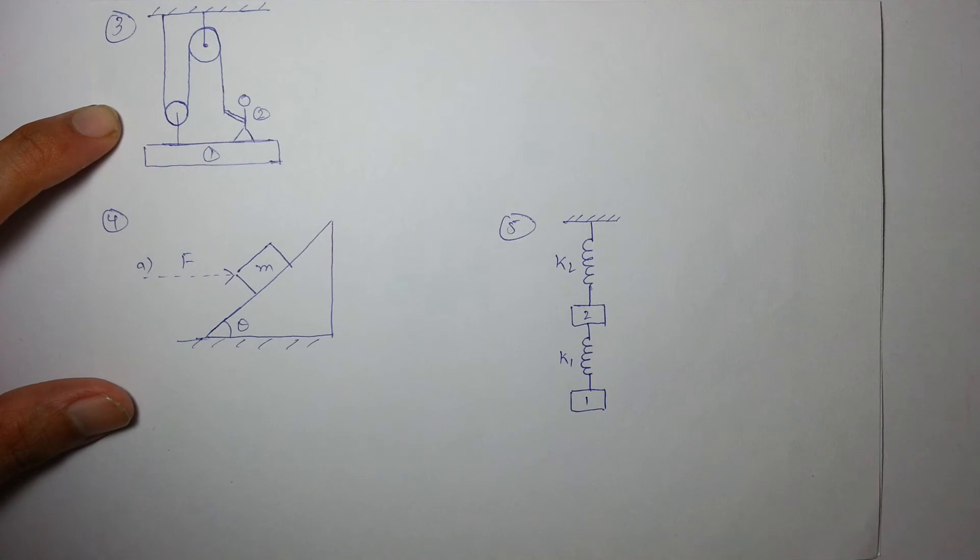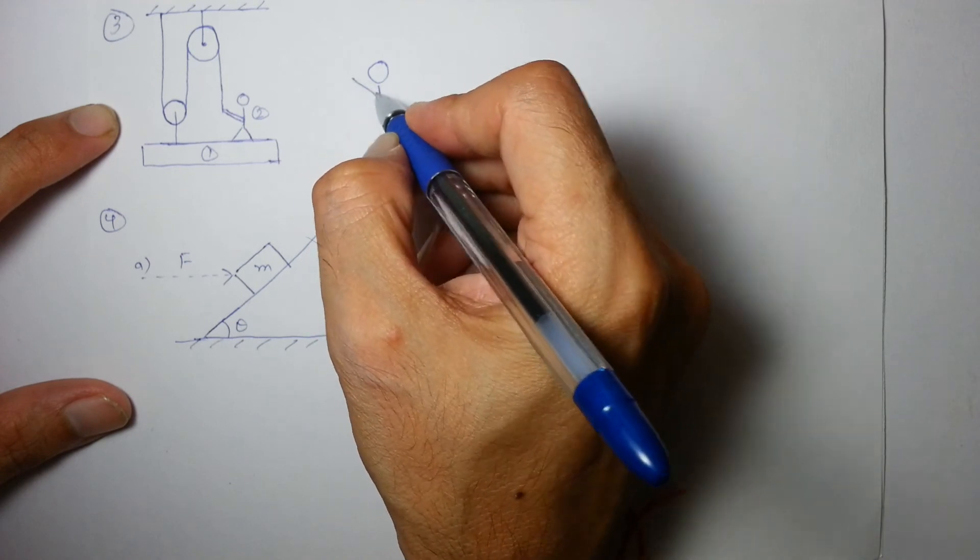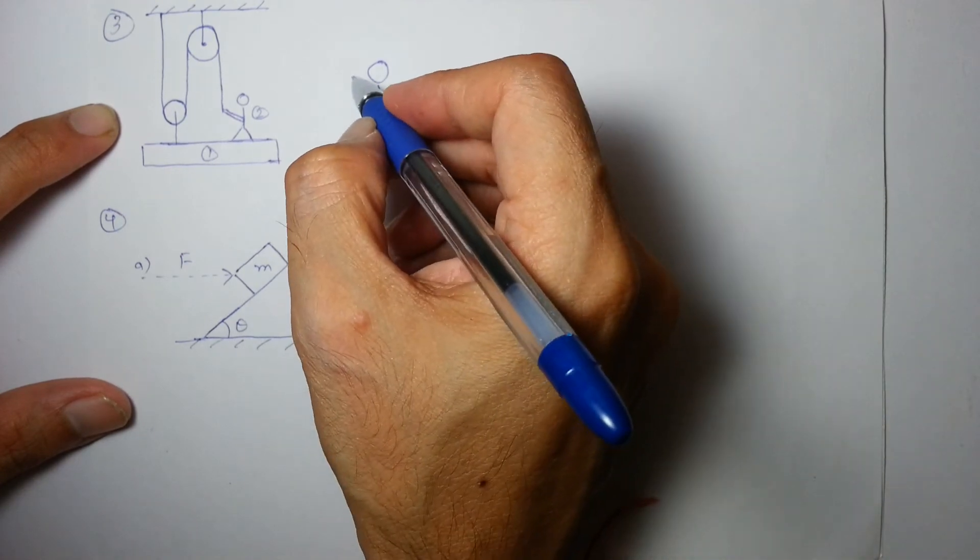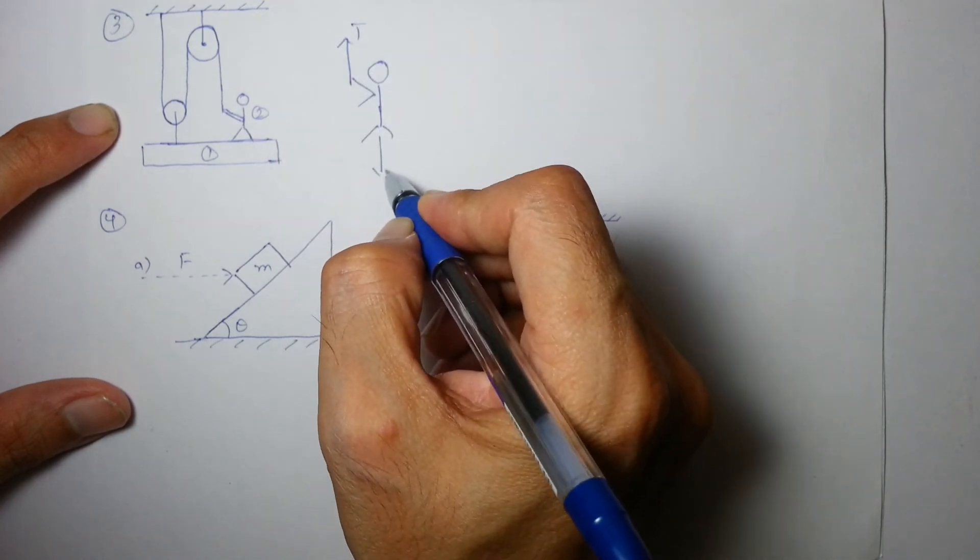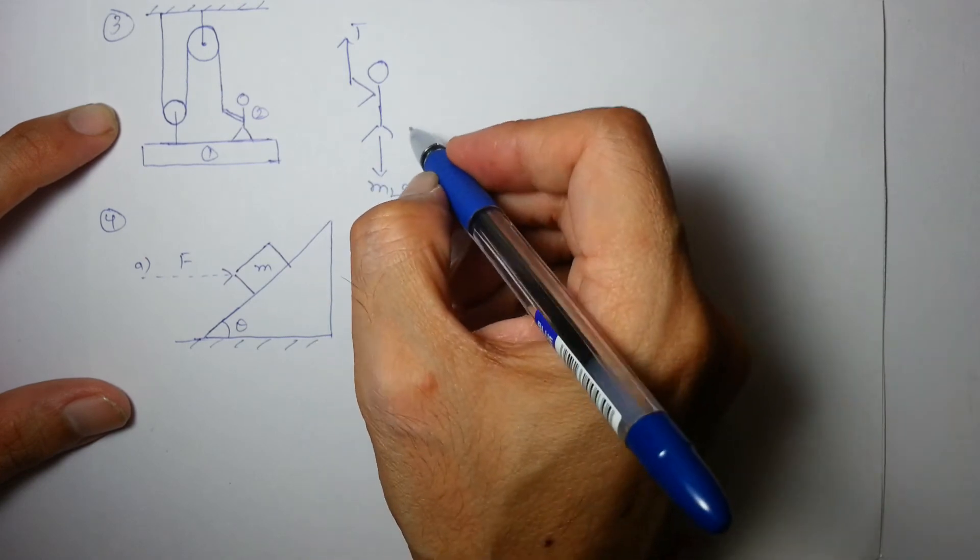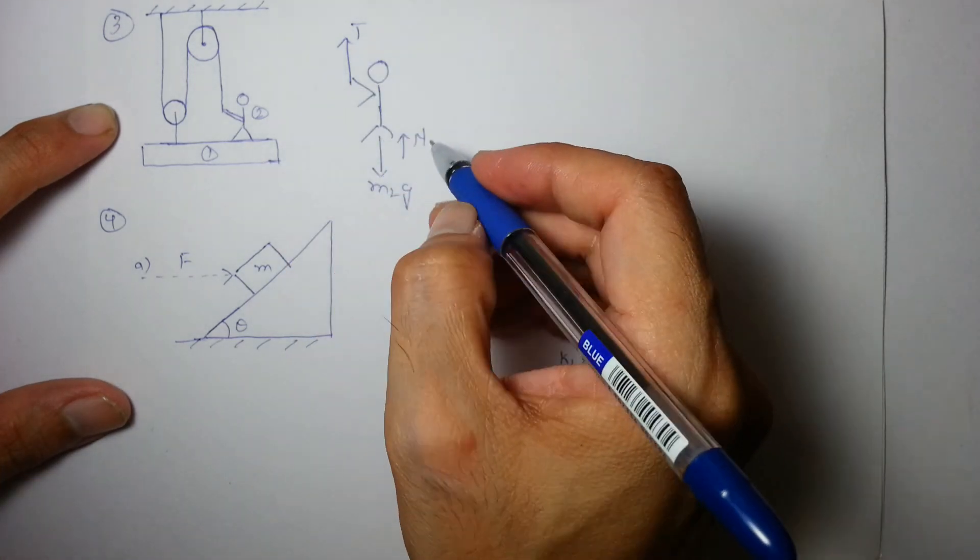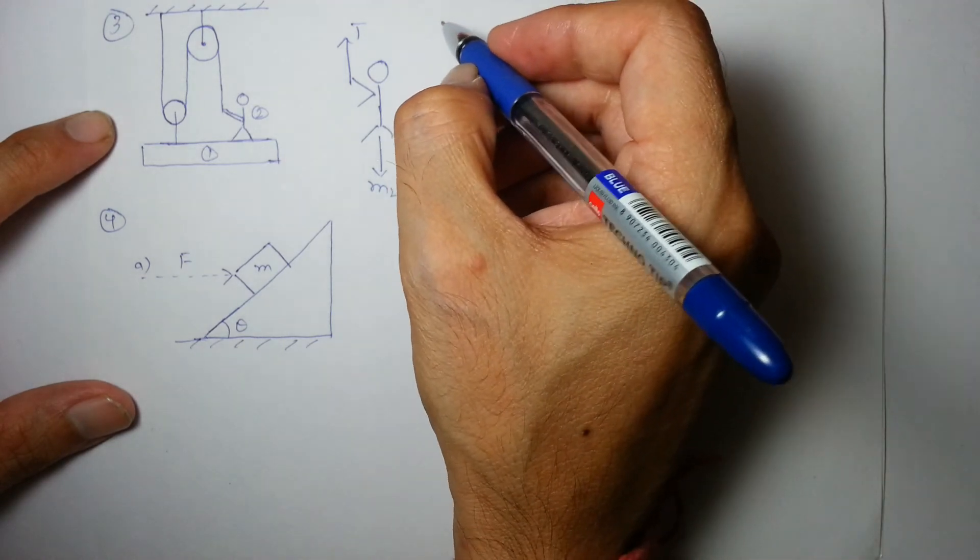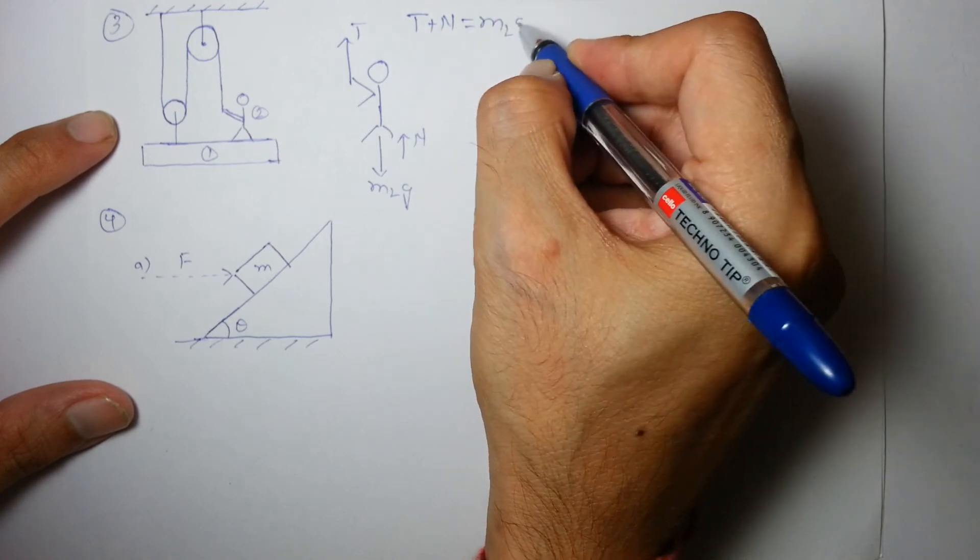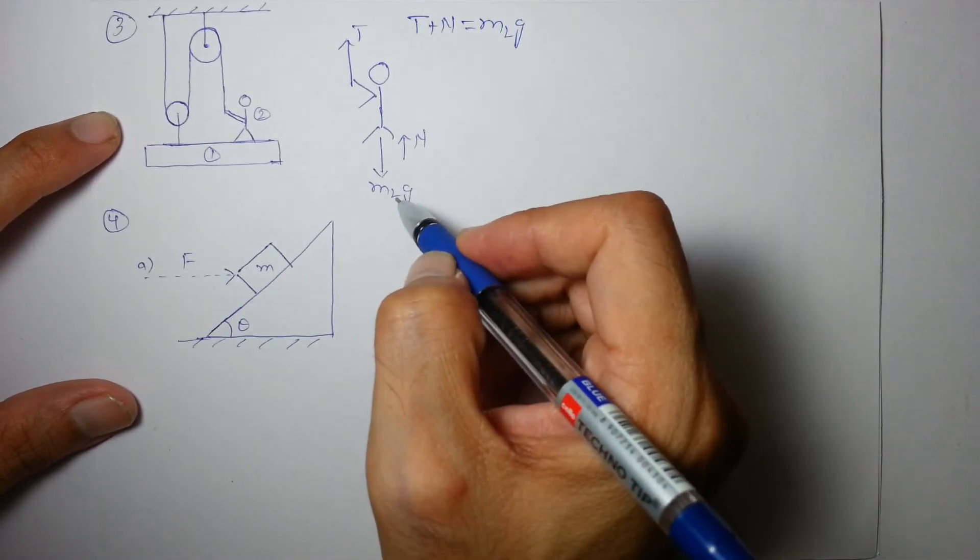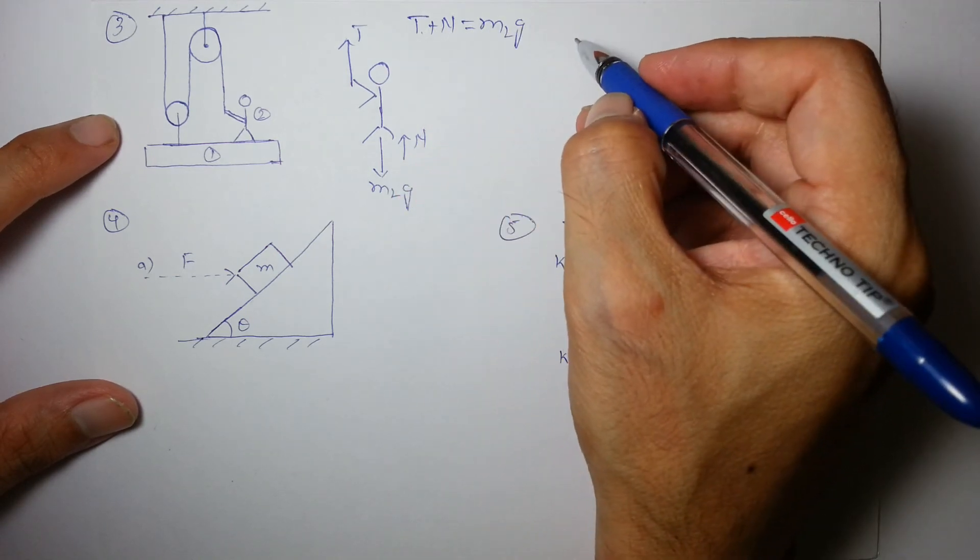So, let's draw the FBD of the man first. First, man is experiencing tension on man by string, its weight, let's say m2g and the normal reaction from the plank. Under these three forces, it is at equilibrium. So, we can say T plus n balances m2g. Net upward force balances net downward force or T plus n minus mg is equal to 0. They are both same things.